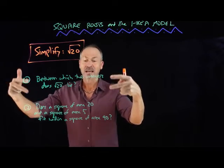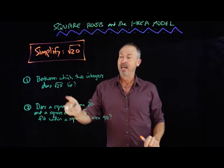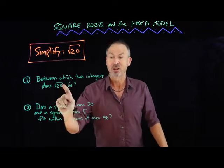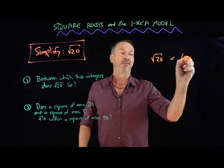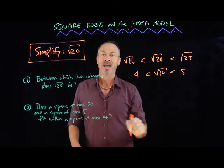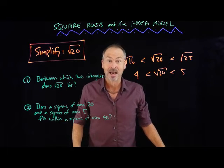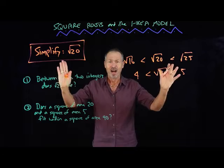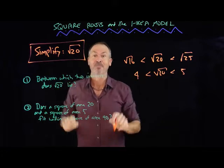Here are two questions about what I might want to do with root 20. First question: between which two integers does root 20 lie? I'm definitely going to leave it as root 20 — that's a much simpler form for answering that question, because my brain sees right away that root 20 is smaller than root 25 and bigger than root 16. So root 20 is between 4 and 5; root 20 must be 4 point something. I would not be able to answer that easily by rewriting it as 2 root 5 in a knee-jerk way.